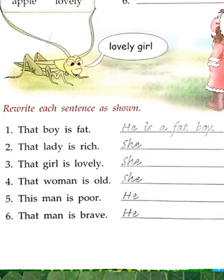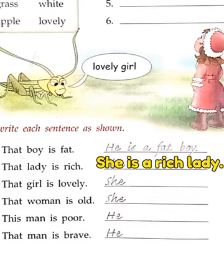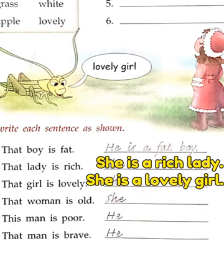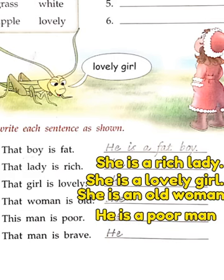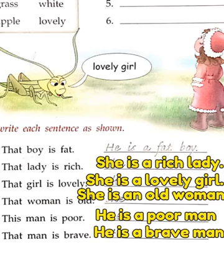Number two: 'The lady is rich' — toh iska sentence banayenge: 'She is a rich lady.' Number three: 'The girl is lovely' — banayenge: 'She is a lovely girl.' Number four: 'The woman is old' — banayenge: 'She is an old woman.' Number five: 'This man is poor' — banayenge: 'He is a poor man.' Number six: 'The man is brave' — banayenge: 'He is a brave man.'